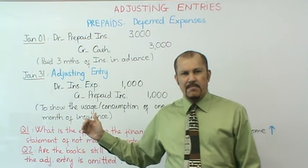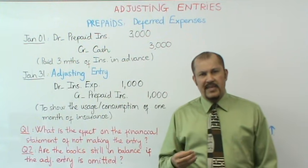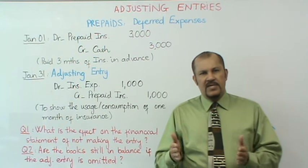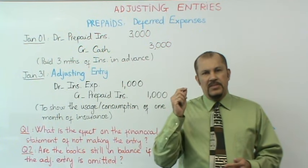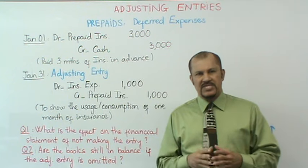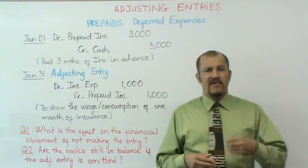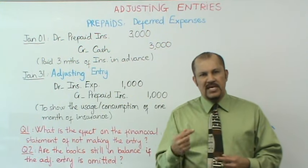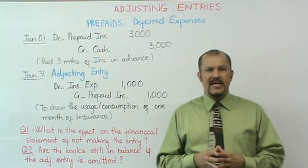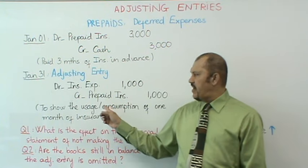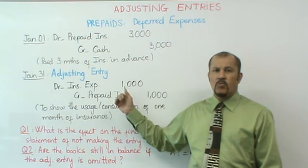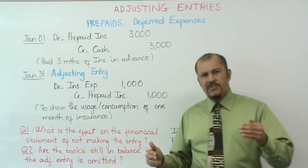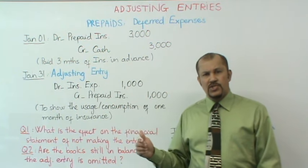Let's fast forward to the end of the month on January 31st — this is where the adjusting entry comes into play. During the month, as a result of a month having elapsed, the employer has used up one month of those three months of insurance coverage. The adjusting entry reflects the usage of one month of insurance — that's your insurance expense. Simultaneously, using up a month of insurance reduces our prepaid insurance by one month. We debit insurance expense for $1,000 and credit prepaid insurance for $1,000, reducing the asset account.